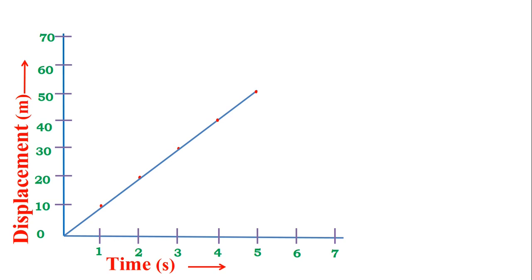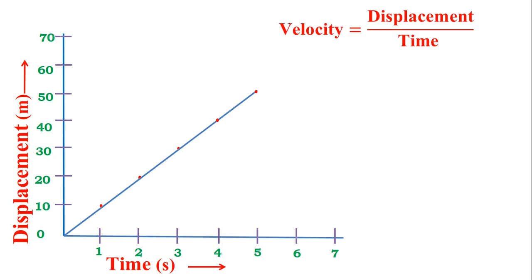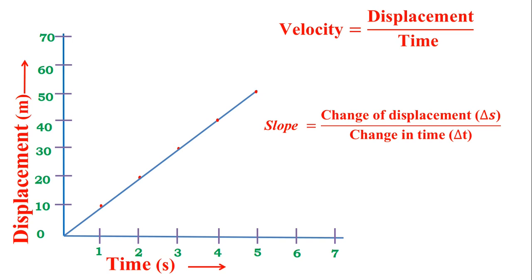To find out the velocity of that body, we use the formula: velocity equals displacement divided by time. Mathematically, if we have total displacement and total time, we can calculate it easily. There is another way also — with the help of the graph we can find out the slope. If the slope of this graph is found, we get the velocity of that body.